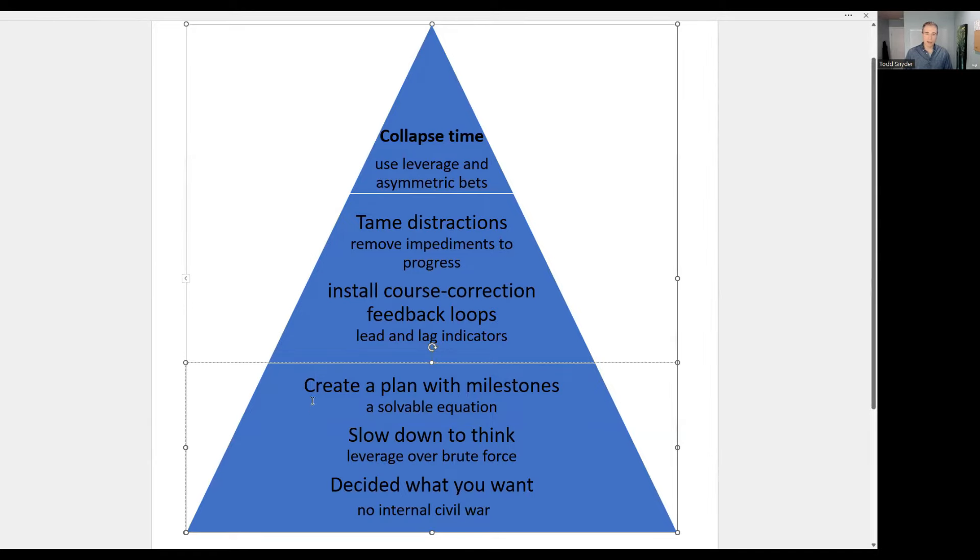This is also something that helps with the next part, which is to install a course correction feedback loop. This is to prevent entrepreneurs from that common problem where you start with one idea and then you start getting shiny object syndrome and you start wandering off to do something else, where you spend most of your day looking into new ideas or networking instead of getting done the stuff that can actually help you achieve your goals.